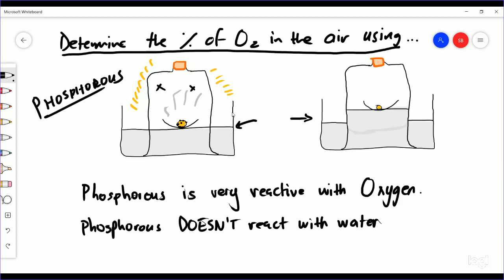So you can see that the phosphorus piece, the small piece that we used here, has become even smaller and the water level has risen up to this level. So you could measure the initial volume and then measure the final volume, and again what you would get here is 21% for oxygen.